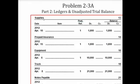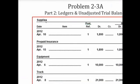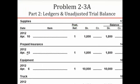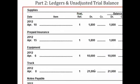More assets include supplies, prepaid insurance, equipment, and truck — all of which have a normal debit balance. For supplies, on April 10th on journal page number 1, it was debited for $1,800, giving a balance of $1,800. Prepaid insurance on April 15th was debited for $1,800 and has a debit balance of $1,800. Equipment on April 6th was debited for $10,000 on journal page number 1, giving a balance of $10,000. The truck was debited for $21,000 on April 8th, journal page number 1, and now has a debit balance of $21,000.